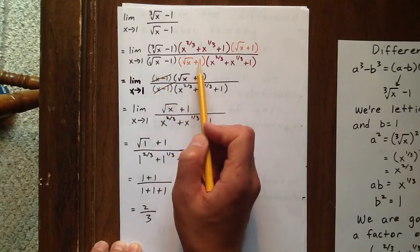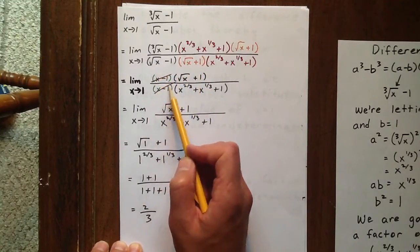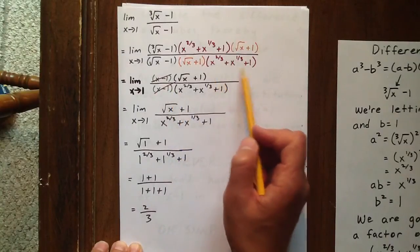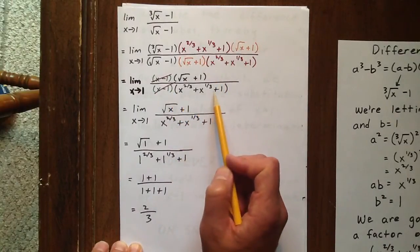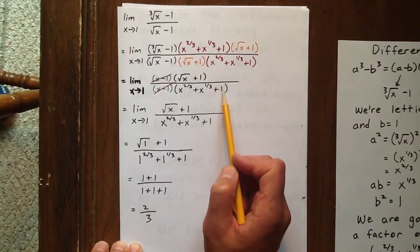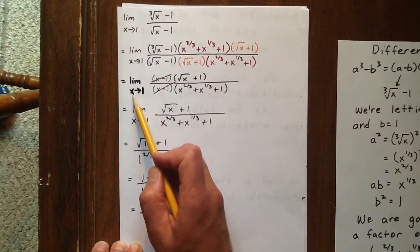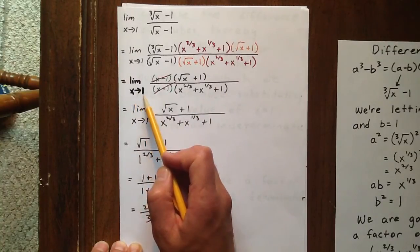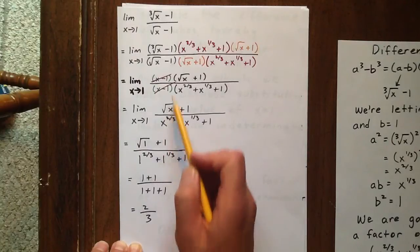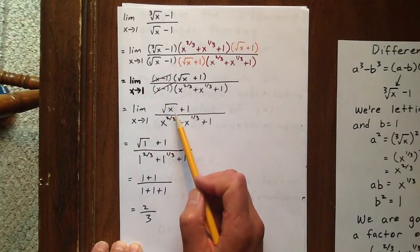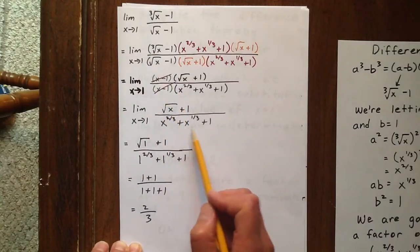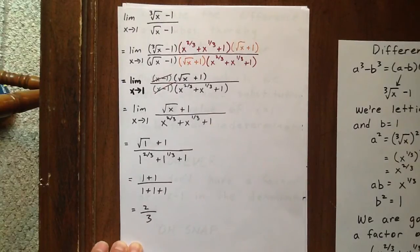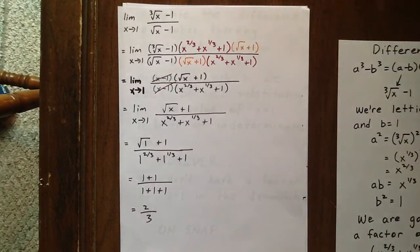In the denominator, using the difference of squares, we've created the factor of x minus 1, and we still have the factor of x to the two-thirds plus x to the one-third plus 1. Our offending factor was x minus 1, so crossing that out, we have the square root of x plus 1 over x to the two-thirds plus x to the one-third plus 1. From here, we can substitute an x value of 1 into our expression, and our ultimate answer is two-thirds.